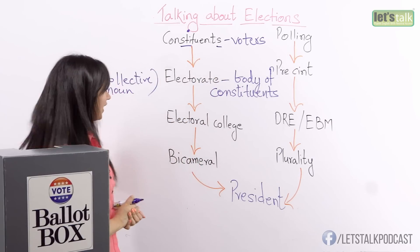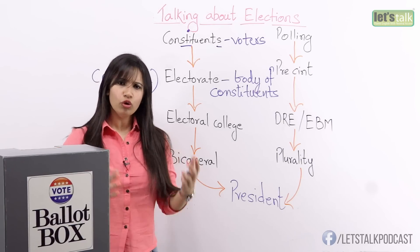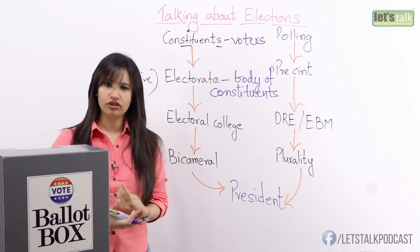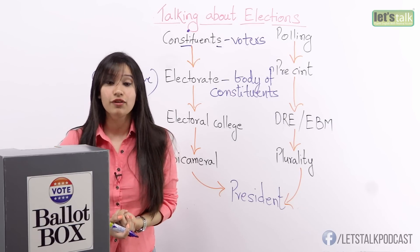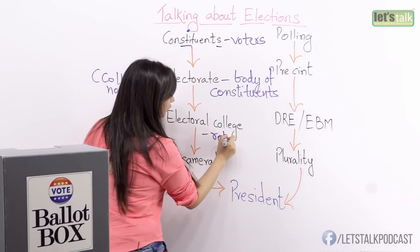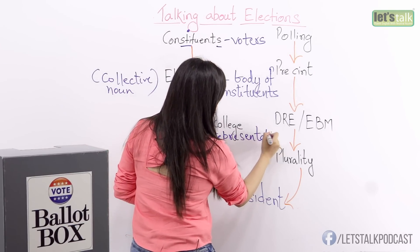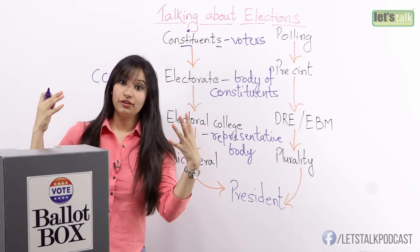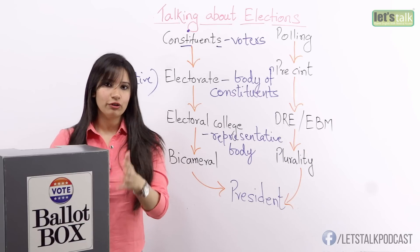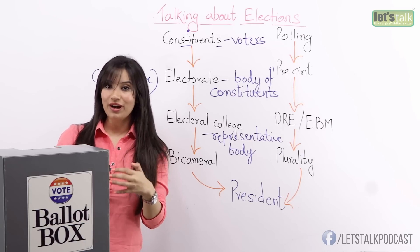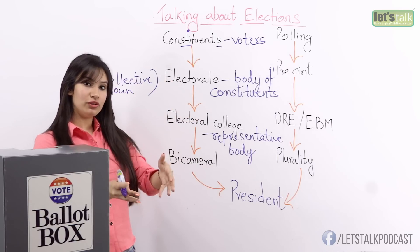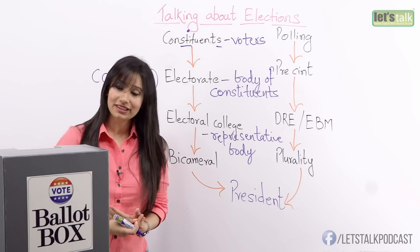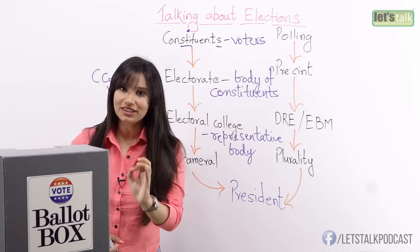Let's look at the next word: electoral college. Who does the electorate or the constituents vote for? They vote for the electoral college, which is a representative body. For the US, it's particularly about 538 people who form the US Congress, voted by the constituents or the electorate. They come together and vote for the electoral college — the representative body in the US having 538 members.